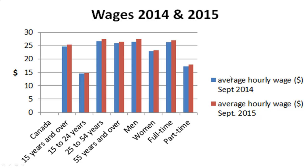The 15 to 24 group's wage did rise a little bit from 2014 (the blue) to 2015 (the red), but it's still the lowest. That's because a lot of people aged 15 to 24 are probably part-time workers, maybe earning a student wage, which is lower than what older workers earn. The 25 to 54 category makes quite a bit more — we're talking about a little under $15 versus maybe $26 or $27 an hour, so considerably higher.